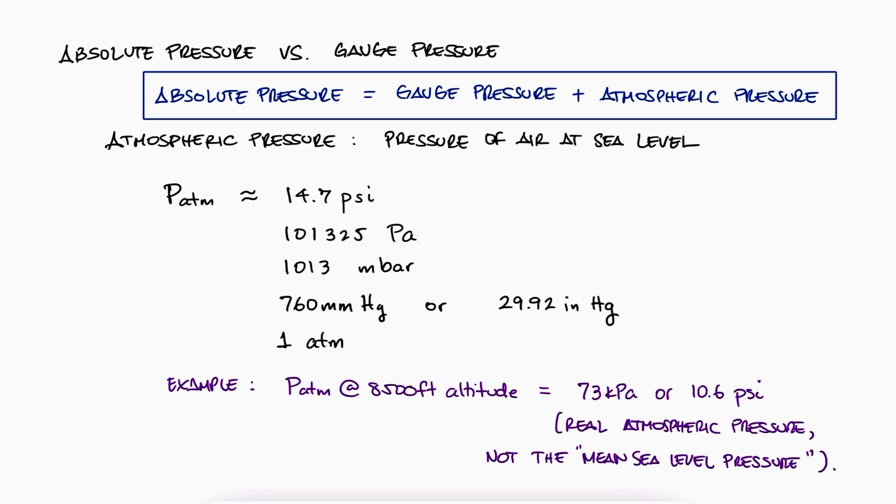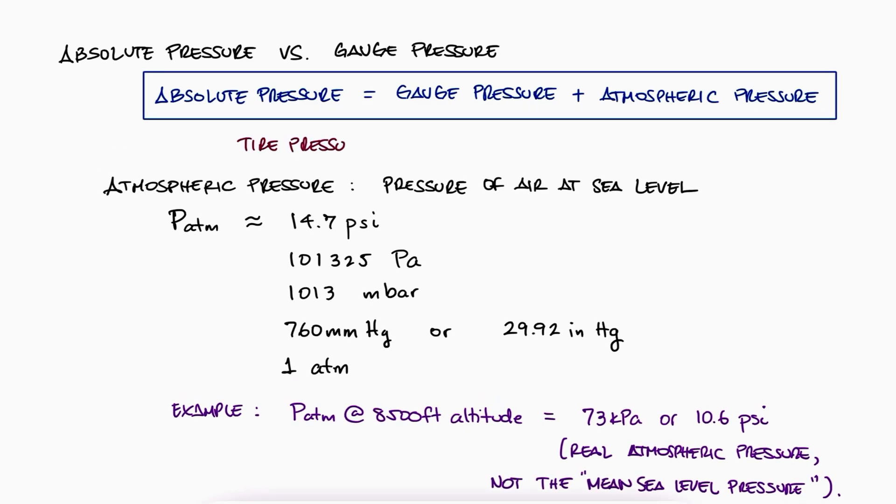Therefore, the difference between the absolute pressure and the gauge pressure is precisely the atmospheric pressure. For example, when measuring the tire pressure, we use gauge because we want to know the pressure inside it with respect to the outside pressure. For their units, we usually label them psi A for absolute and psi G for gauge. If only psi is used, it most probably refers to gauge pressure. In metric, absolute pressure usually goes with an abs in parentheses. For example, 120 kilopascals, absolute pressure.